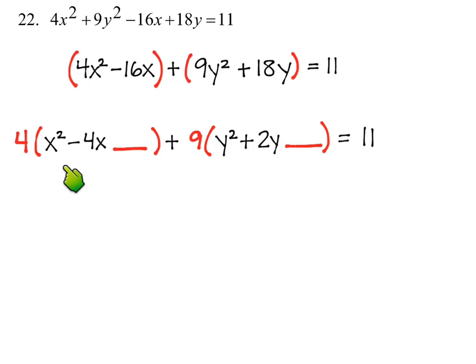To do that, we need to factor out a 4 from the group of x's and factor out the 9 for the group of y's, because to complete the square we always want our first term to be 1 and then our variable squared.